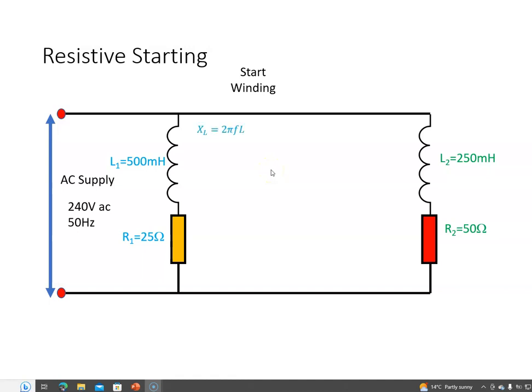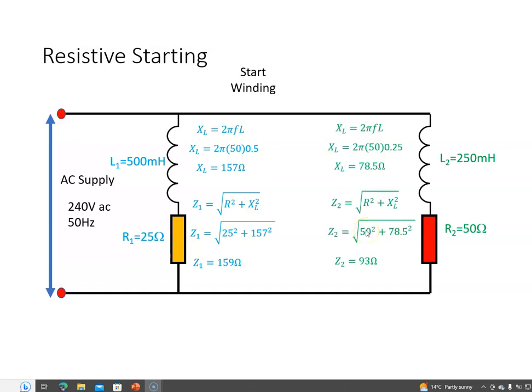Okay, so if we get the inductive reactance it's 2πfL: 2 by π by 50 hertz by 500 millihenries, that gives me inductive reactance of 157 ohms. And then if I want to get the impedance of this run branch it's r squared plus XL squared, I get the square root of that and that works out to be 159 ohms. Similarly I do it with the start winding but we're going to use 250 millihenries here and 50 ohms, and that gives me a total impedance of 93 ohms.